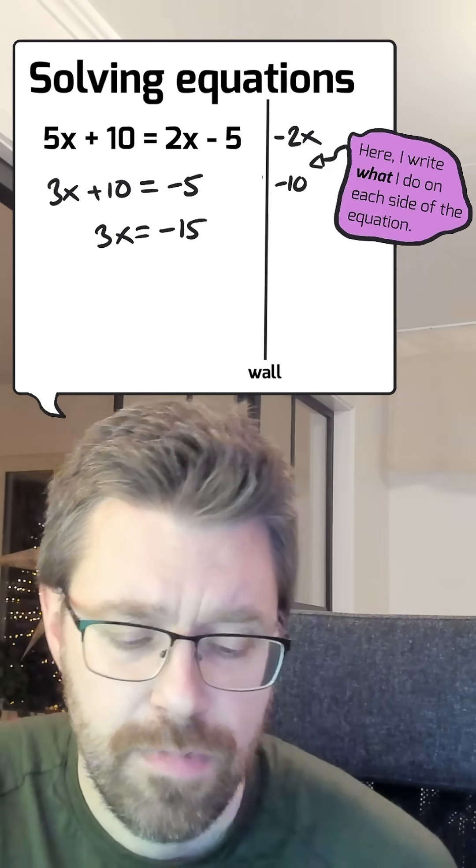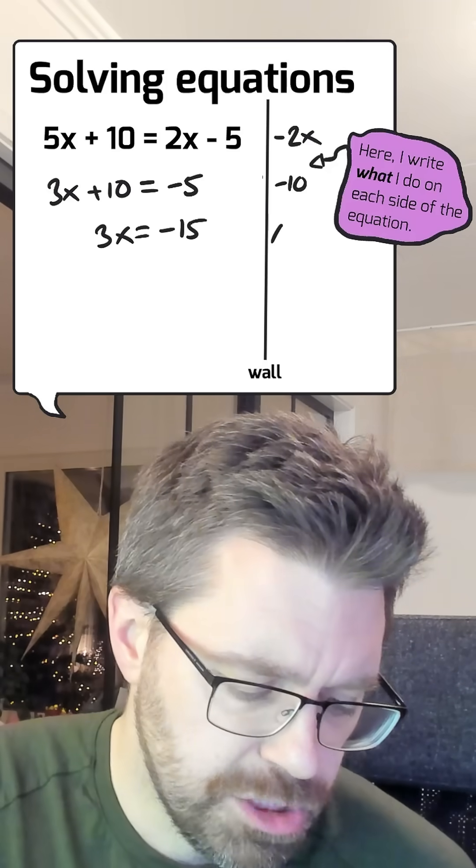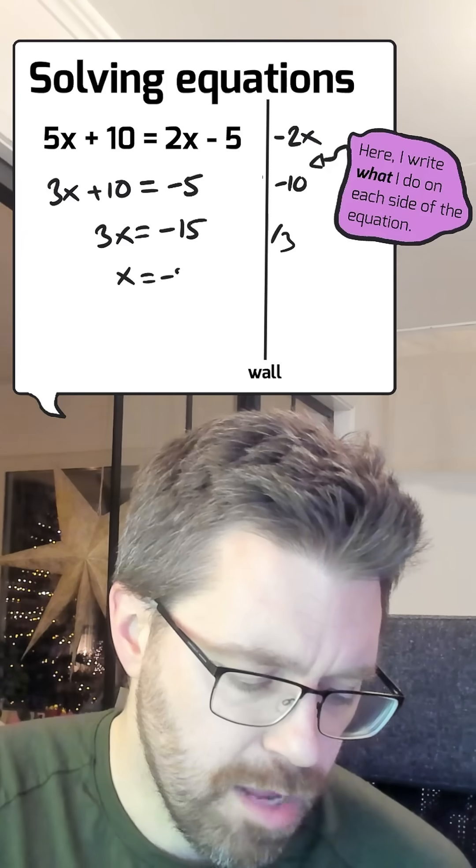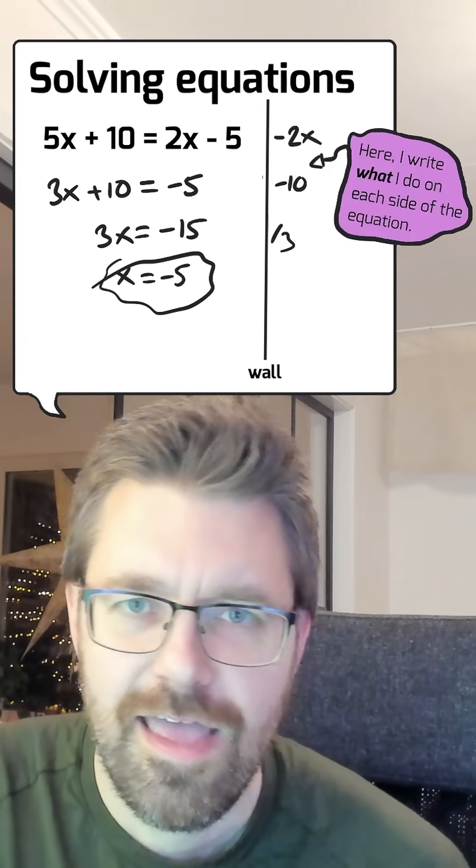And then the last step is to use inverse operation to multiplication, and it is division. So divide by 3 on each side, and then we've got x equals minus 5. And this is the answer.